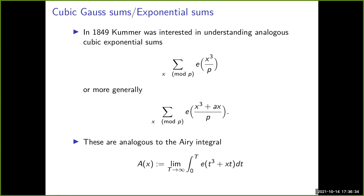What I actually want to talk about are cubic Gauss sums. This goes back to Kummer, who was interested in taking this exponential sum with a quadratic phase, changing x² to x³, and declaring this a cubic Gauss sum. The first question is: do these cubic Gauss sums have explicit formulas? To get quick intuition, we proceed by analogy — the cubic Gauss sum is an analog of the Airy integral, the integral with a cubic phase.